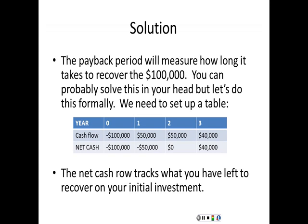The row below that, labeled 'net cash,' tracks our net cash position to pay the project back. When we start the project, we're $100,000 in the hole — that's how much I need to recover. In the first year we make $50,000, so my net position after one year is negative $50,000.